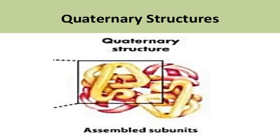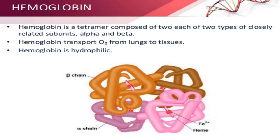Finally, the quaternary structure. The majority of proteins are composed of single polypeptide chains, but some proteins consist of two or more polypeptide chains which may be identical or different. Such proteins are termed oligomers and possess quaternary structure. When it consists of two polypeptides it is called a dimer. A homodimer consists of two copies of the same polypeptide chain, while in a heterodimer the polypeptides differ.